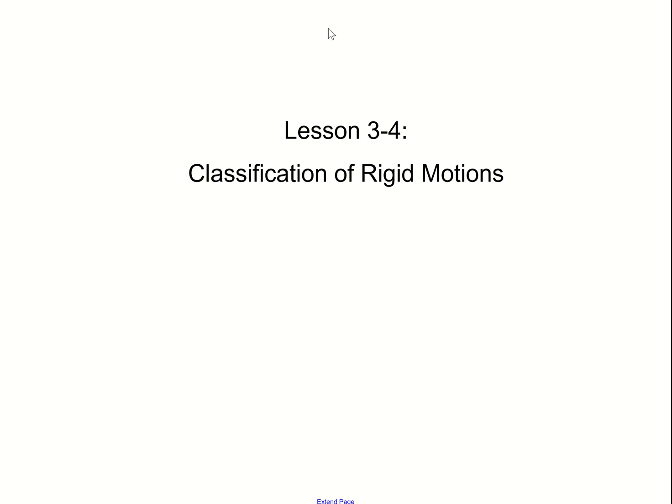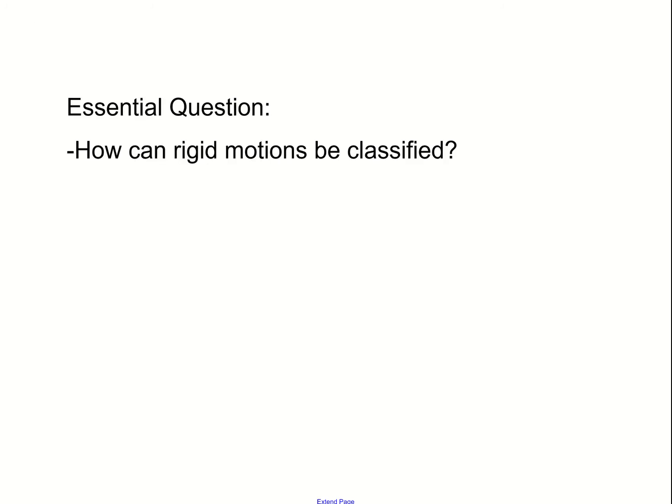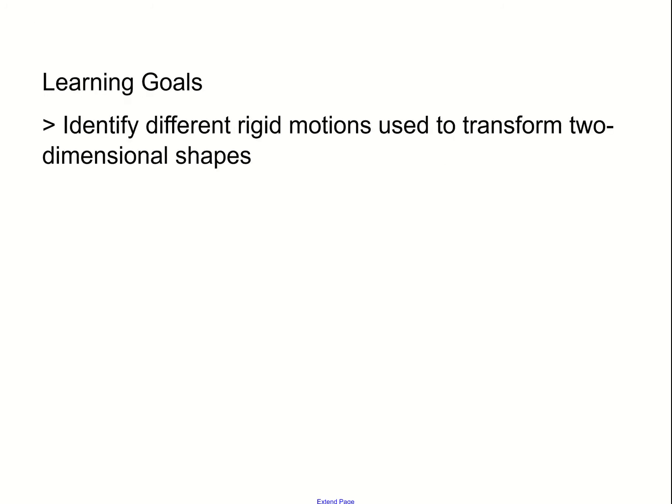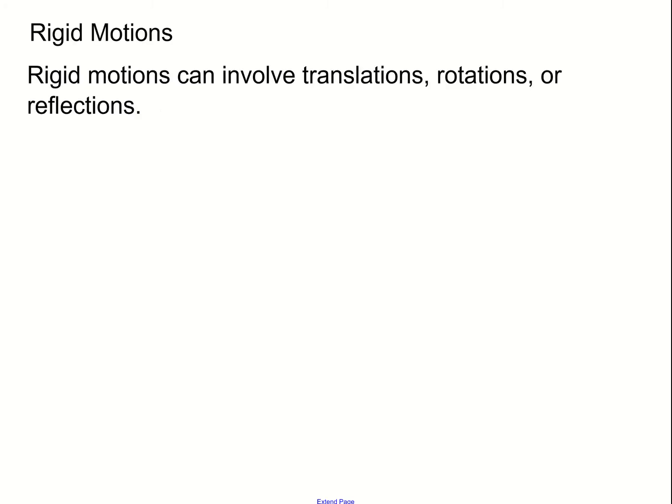Hello class, welcome to lesson 3.4. Today we're going to be talking about classification of rigid motions. Our goals are to identify different rigid motions used to transform two-dimensional shapes. We're going to introduce a new type of rigid motion and a new vocab term known as the glide reflection. Remember that rigid motions can involve translations, rotations, or reflections.